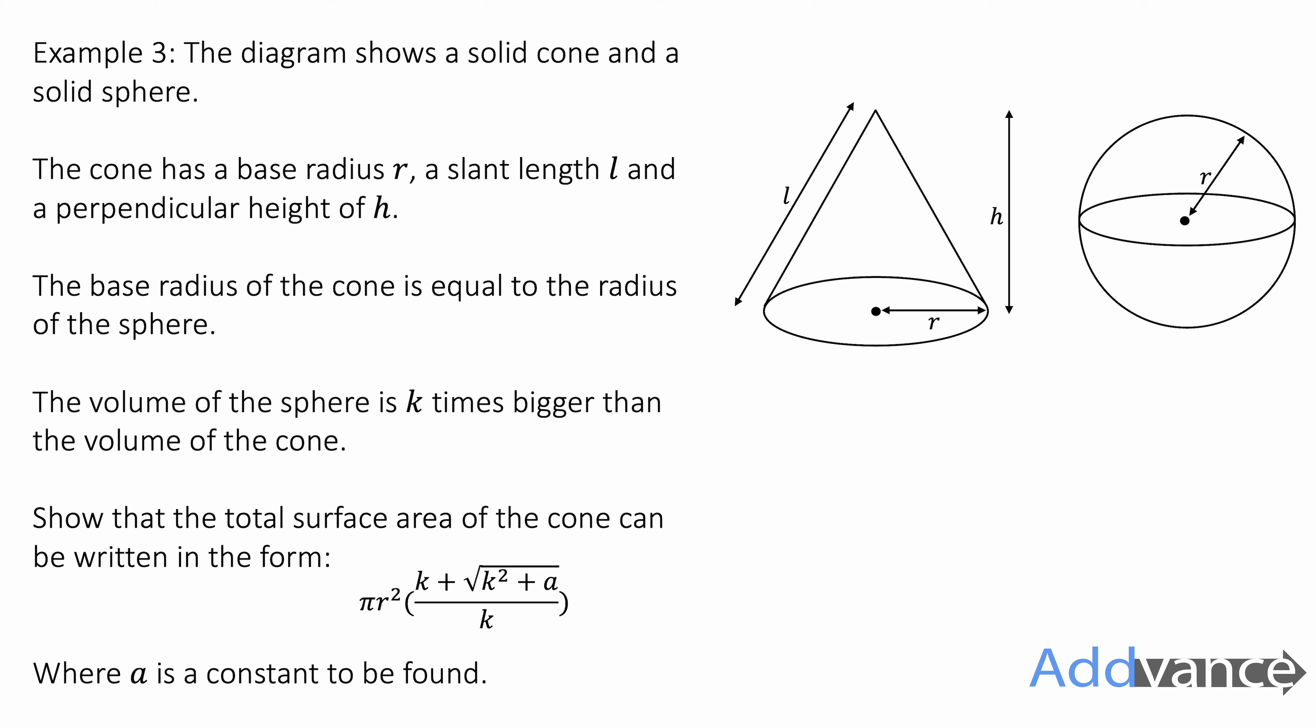Example 3. This is a doozy. This is a very difficult exam-start question. And it's probably one of the most difficult GCSE questions I've ever seen. It says, the diagram shows a solid cone and a solid sphere. The cone has a radius, base radius of r, a slant length l and a perpendicular height h. The base radius of the cone is equal to the radius of the sphere. The volume of the sphere is k times bigger than the volume of the cone. Show that the total surface area of the cone can be written in the form pi r squared times (k plus square root of k squared plus a over k), where a is some constant to be found. When it says a is some constant to be found, we need to find what a is. Looks quite overwhelming, but let's take it step by step and see how far we get.